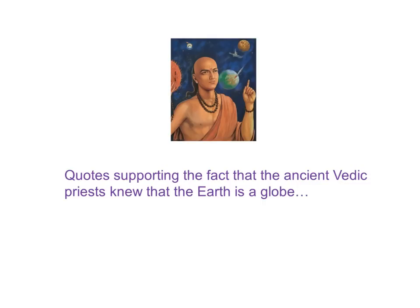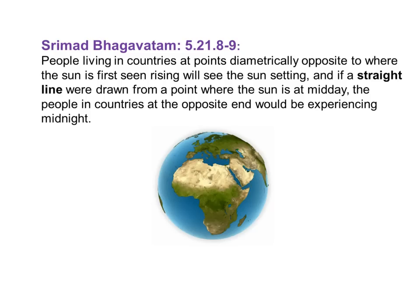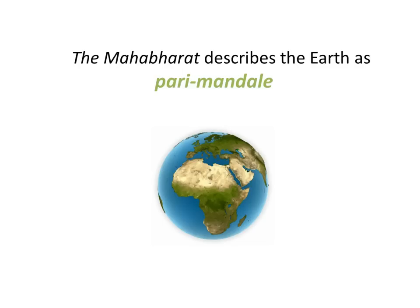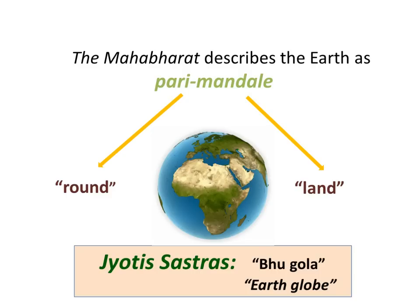I would need to start with quotes supporting the fact that the ancient Vedic priests knew that the Earth is a globe. Here's a quote from the 5th canto of the Srimad Bhagavatam. People living in countries at points diametrically opposite to where the Sun is first seen rising will see the Sun setting, and if a straight line were drawn from a point where the Sun is at midday, the people in countries at the opposite end would be experiencing midnight. This is only possible if the Earth is circular. The great epic Mahabharata describes the Earth as Pari Mandalay, meaning round land. And in the Jyotish Sastras we find references to Bhugola, which translates as Earth Globe.